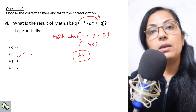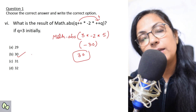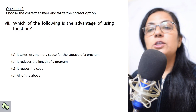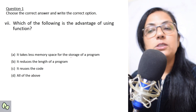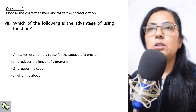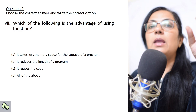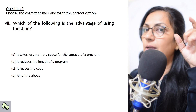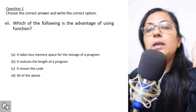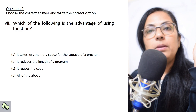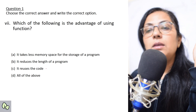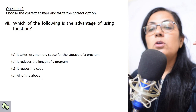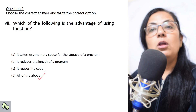Which of the following is an advantage of using functions? It takes less memory space for storage of the program — because instead of writing the same thing again and again, we write it as a function and call it whenever needed. It reduces the length of the program, and it reuses the code. So the correct answer is all of the above.